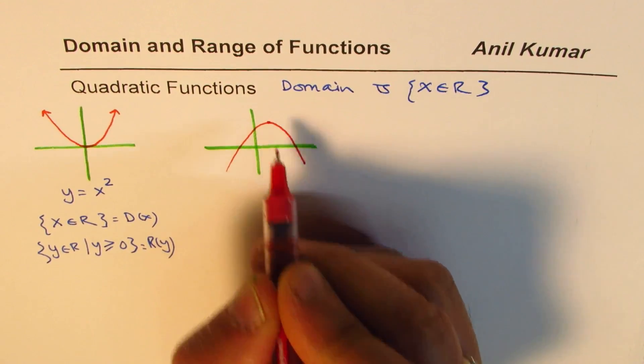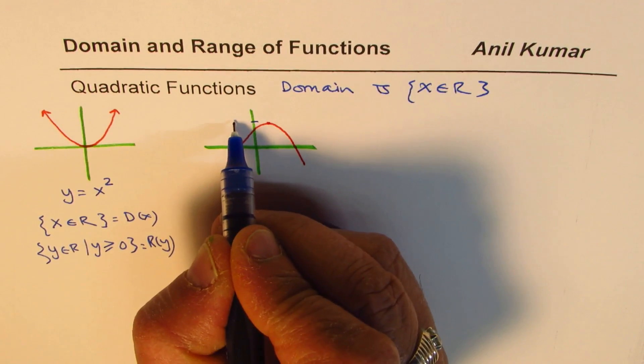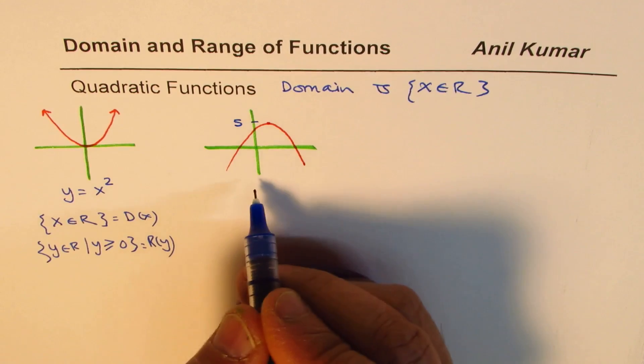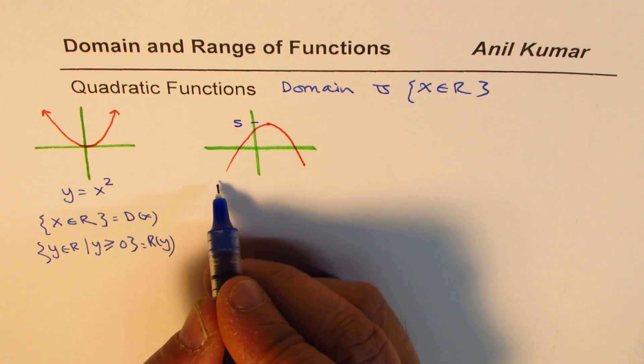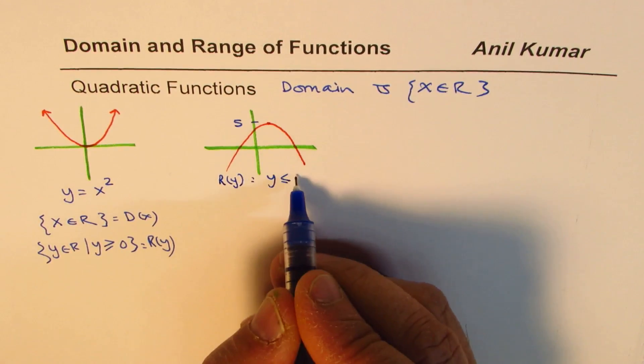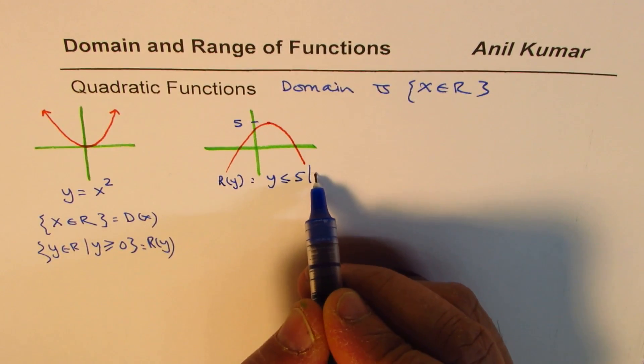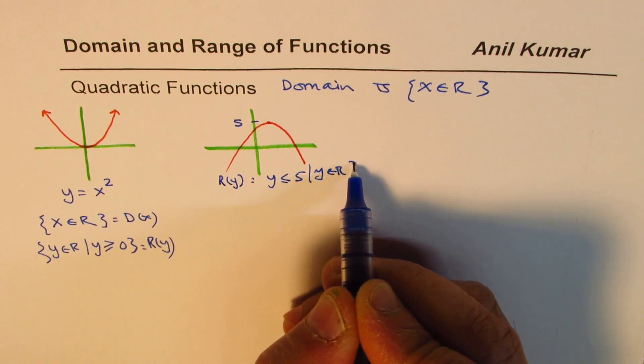So if I have a parabola like this, and this vertex is, let us say, at a value which is 5, then what happens? Well, the range is, you can say range is y is less than or equal to 5. Shall you write y belongs to real numbers? How does it matter?